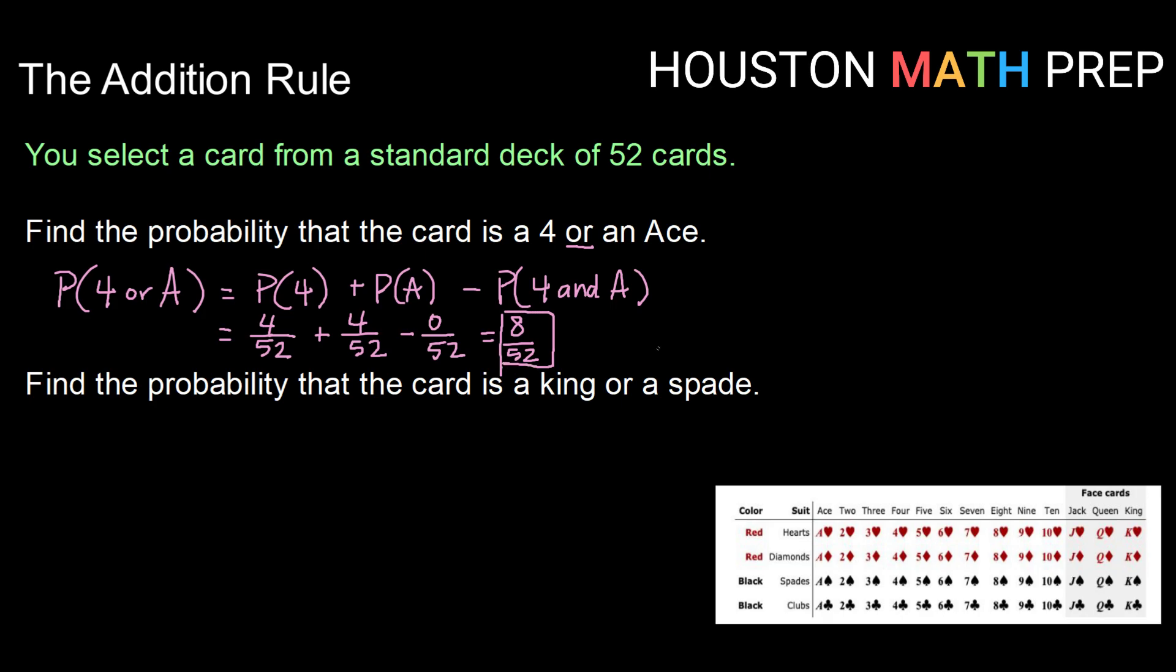Alright, next one. Find the probability that the card is a King or a Spade. Once again we've got that term 'or', so we're using our addition rule. The probability of being a King or a Spade would be P(King) + P(Spade) - P(King and Spade).